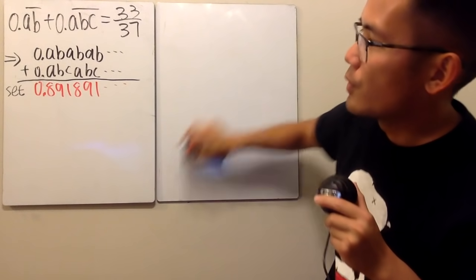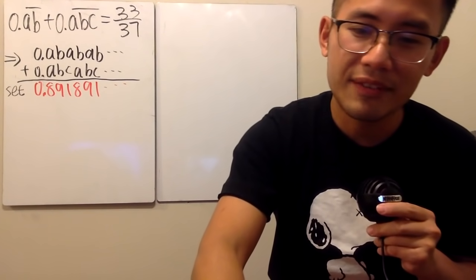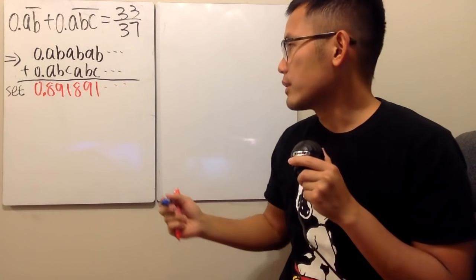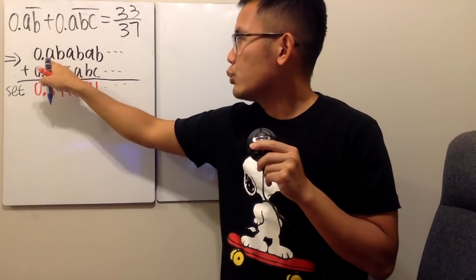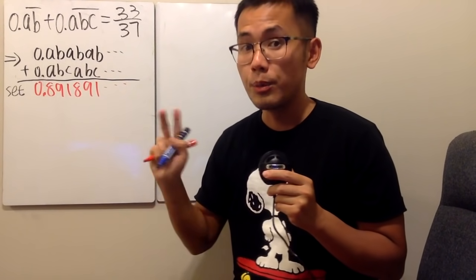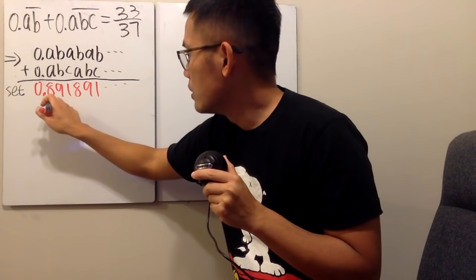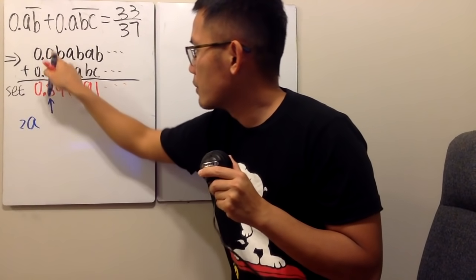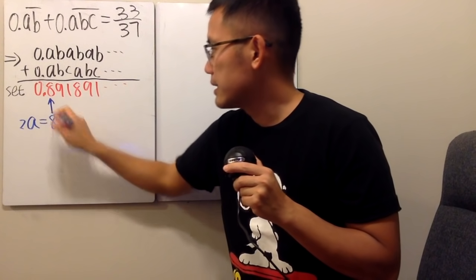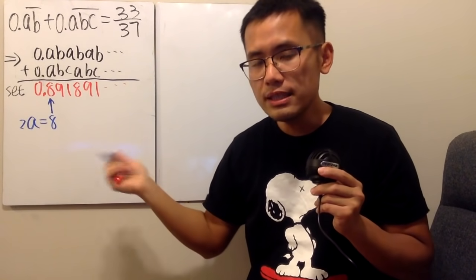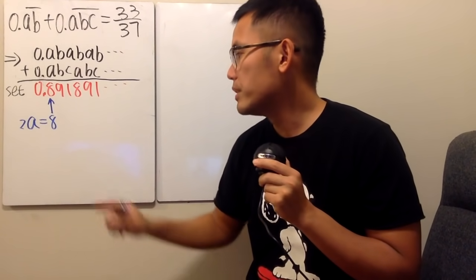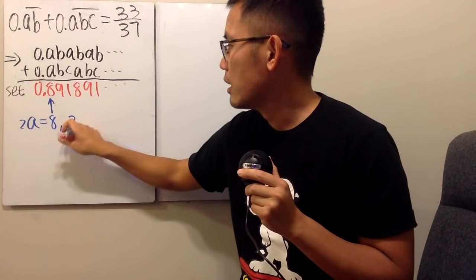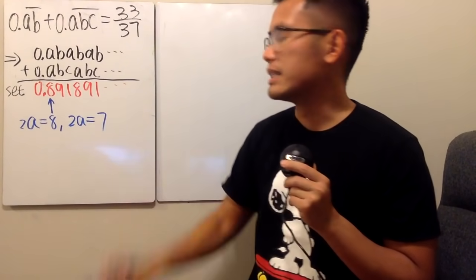Let's reason things out. First, if we add the leading digits A plus A, we get 2A. We can see that 2A equals 8. There is another possibility: 2A could sum to 7 with a carry-over producing the 8.